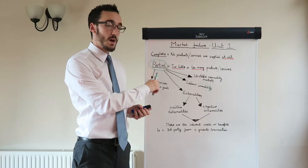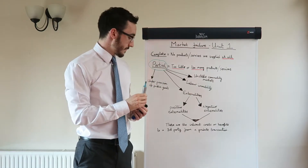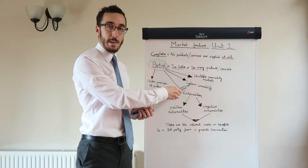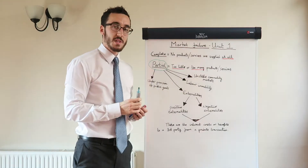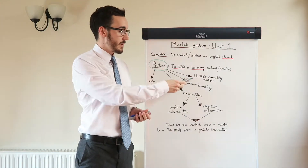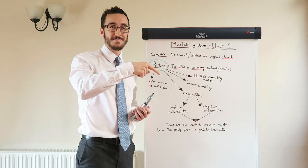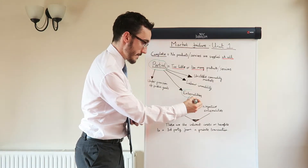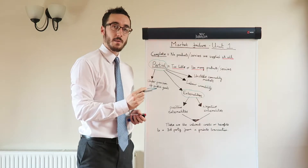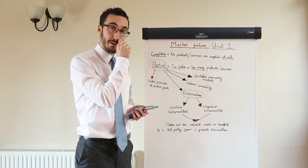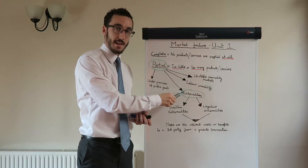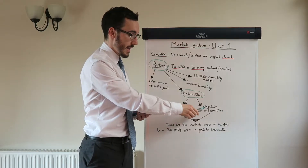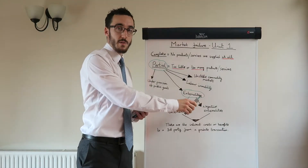Remember there are a number of different types of partial market failure. There is under provision of public goods, labour immobility, and unstable commodity markets. What we're looking at today is externalities. We've got market failure, partial market failure is one type of market failure, and we're looking at one of those which is externalities. We have both positive externalities and negative externalities, and we're going to focus on both of those today.